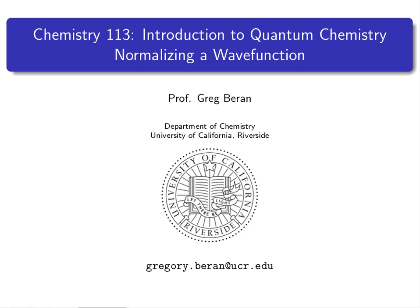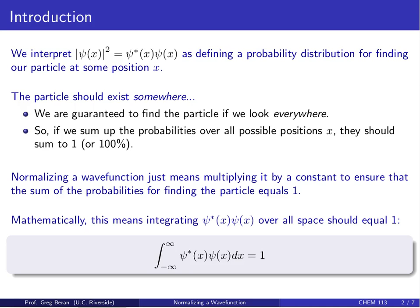This video is going to serve as an introduction to normalizing a wave function. Recall that we interpret the modulus square of the wave function, that is, ψ*(x)ψ(x), as defining the probability distribution for finding the particle at some position x.